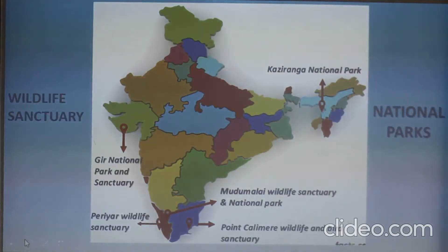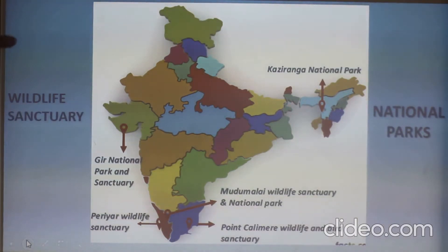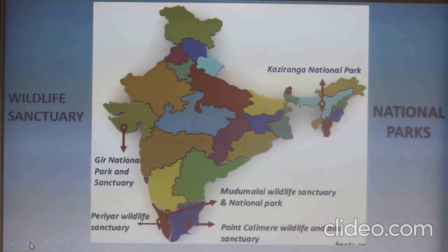When you take this India map, we are able to see the various wildlife sanctuaries and national parks. The first one is Kaziranga National Park. The second one is Mudumalai Wildlife Sanctuary and National Park, Point Calimere Wildlife and Bird Sanctuary, Periyar Wildlife Sanctuary, and Gir National Park.